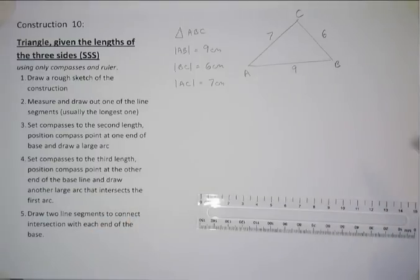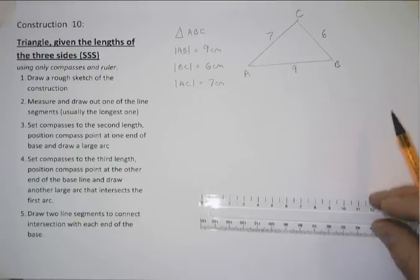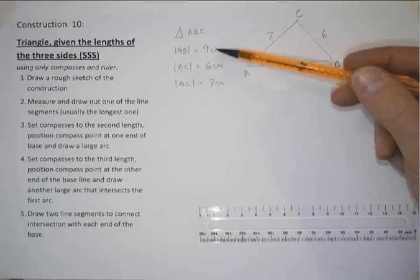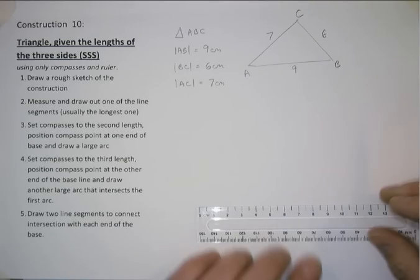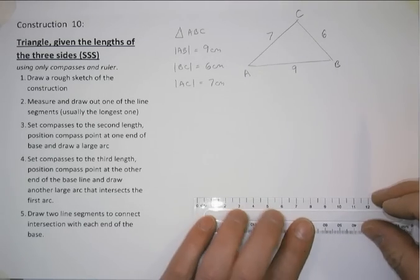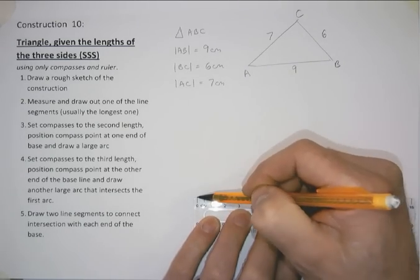So, first thing we want to do is we want to draw the first side. So usually we'll take the largest side, which is our base here. That's 9 centimeters. So we can draw a line segment of 9 centimeters.